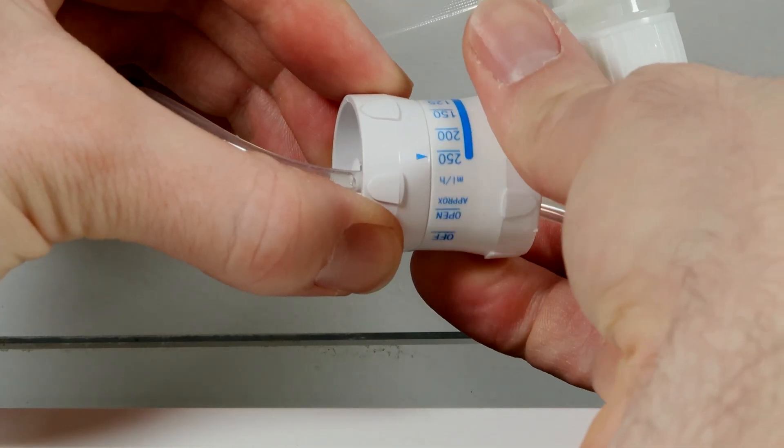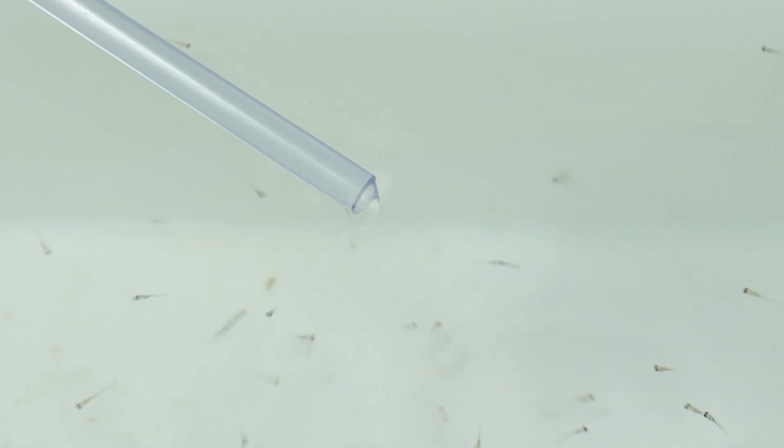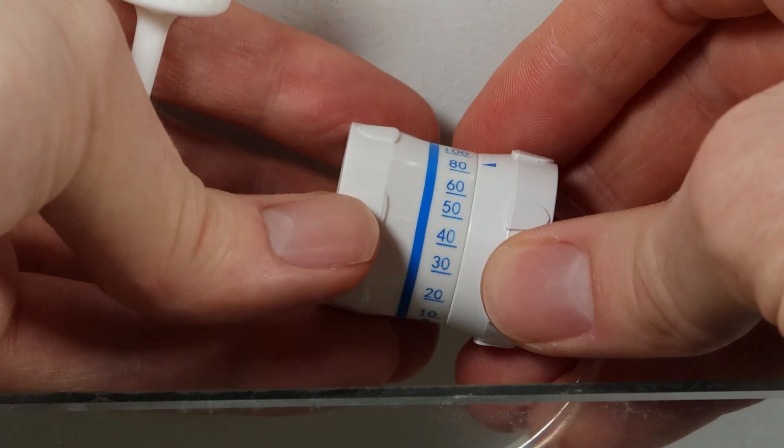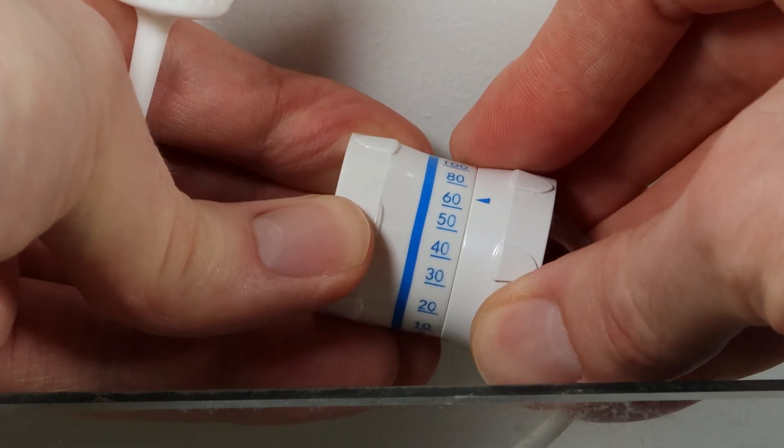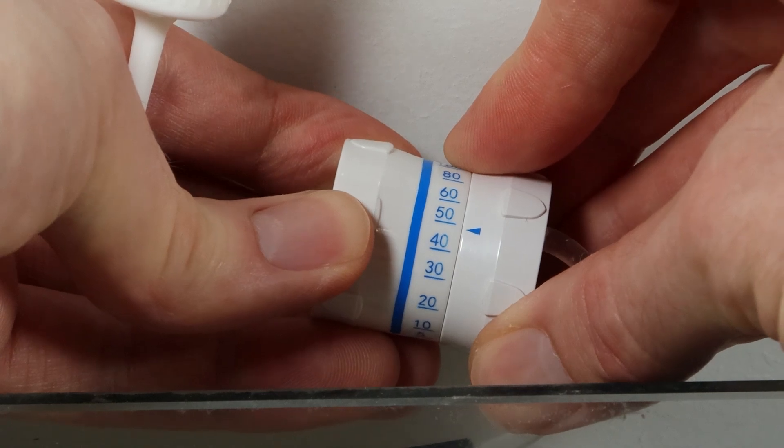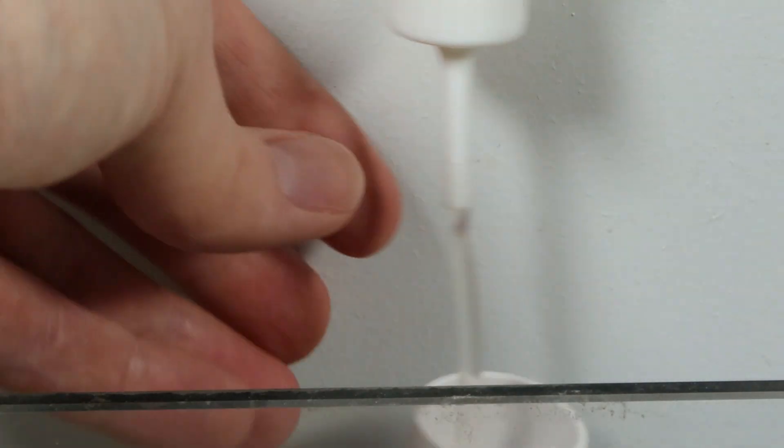At first I let it run open to see where the flow rate tops out. This is way too fast. It would probably be empty in a couple of hours at most. Next I tried the setting for 50 milliliters an hour. On paper, this should last about 5 hours if I have the bag filled to 250.